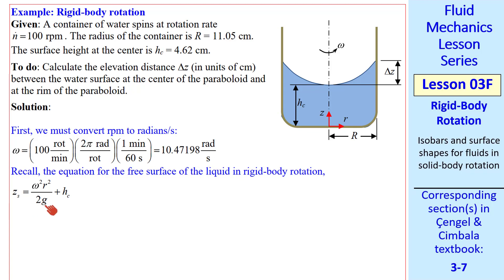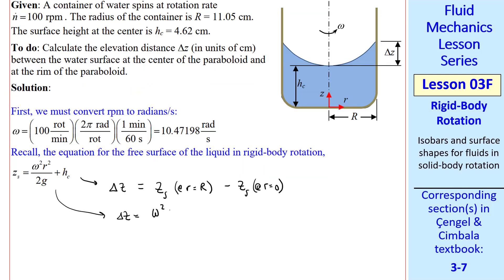Now we apply our equation for the free surface of the liquid. The desired distance is delta z, which is z at the surface at R equal capital R, minus z at the surface at the center line, R equals 0. So this equation gives us delta z is omega squared r squared over 2g plus hc.